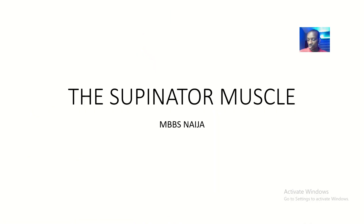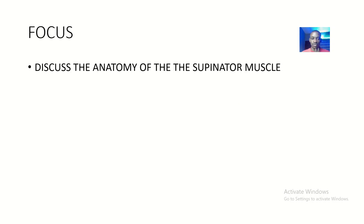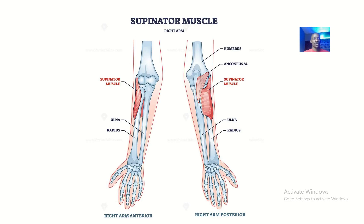We are talking about the muscles of the upper limb, moving on to the forearm. We'll be talking about the supinator, which is a very important muscle of the forearm — its attachments and its action. The focus today is to discuss the anatomy and function of the supinator muscle.